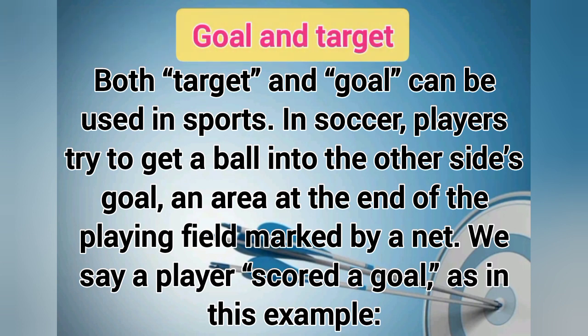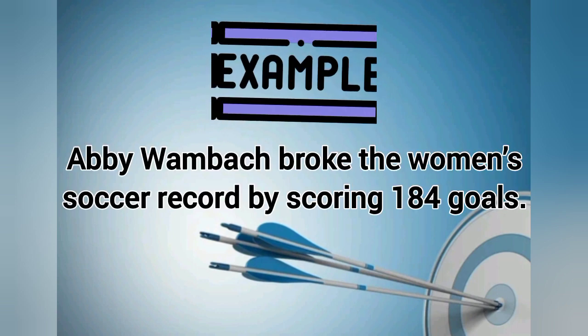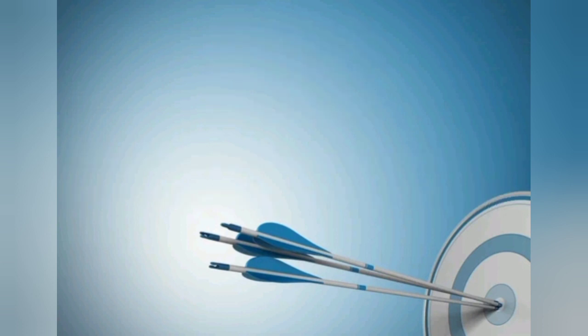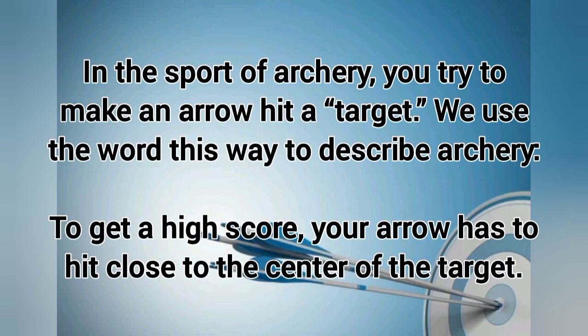Both target and goal can be used in sports. In soccer, players try to get a ball into the other side's goal — an area at the end of the playing field marked by a net. We say a player scored a goal, as in: Abby Wambach broke the women's soccer record by scoring 184 goals. In the sport of archery, you try to make an arrow hit a target. To get a high score, your arrow has to hit close to the center of the target.